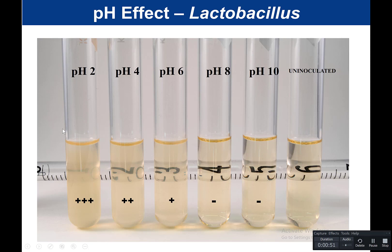The tubes were inoculated with Lactobacillus at pH 2, pH 4, pH 6, pH 8, and pH 10, along with an uninoculated control. We want to quantitate how much the bacteria grew under each condition. We use turbidity as a measurement of growth. To make it easier to quantitate, we take a pipette and stick it behind the tubes, then look at the clarity to read the numbers.